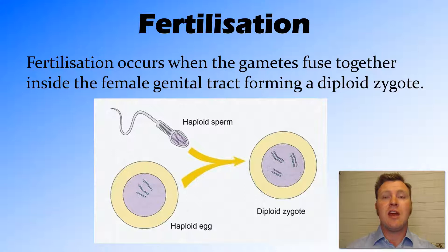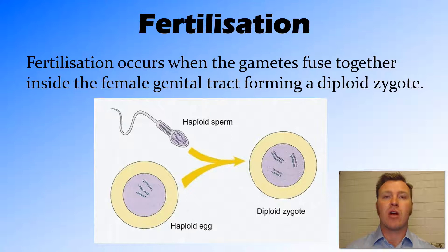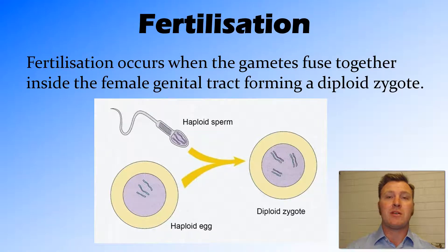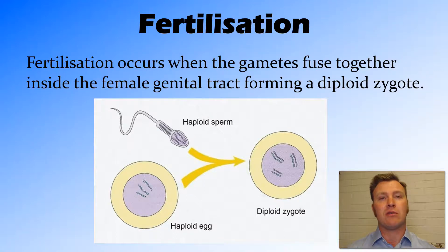When these two gametes meet inside the female — and this usually occurs either in the uterus or in the oviduct — these gametes fuse together to create a diploid cell called a zygote. Diploid means it has the full number of chromosomes, or the full set of genetic material, to produce offspring. So you're going from those haploid gametes, each having half the number of chromosomes, to a diploid zygote. You get half your genetic material from mum and half from dad.